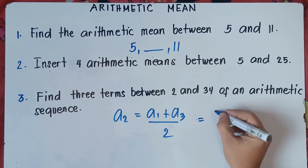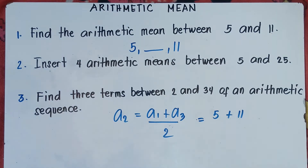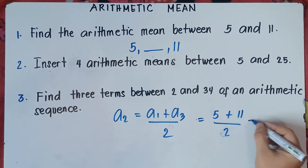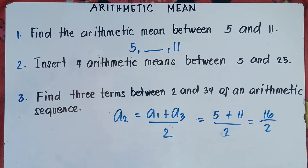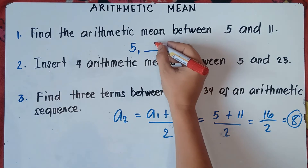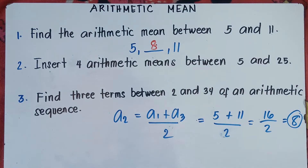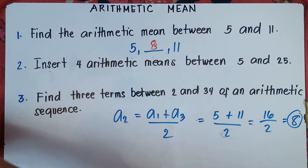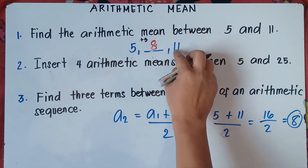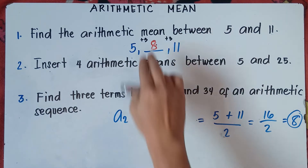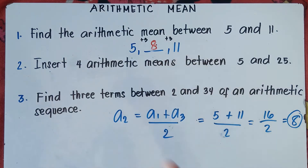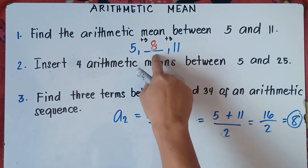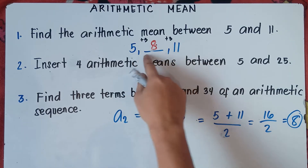So the first term is 5 plus 11, and then we divide it by 2. So 5 plus 11 equals 16, divided by 2. Therefore, the second term is 8. So the sequence is 5, 8, and 11. If we check the common difference: 8 minus 5 equals positive 3, and 11 minus 8 is positive 3. So 5 plus 3 is 8, and 8 plus 3 is 11.